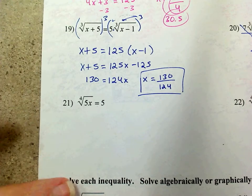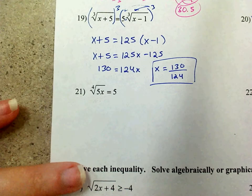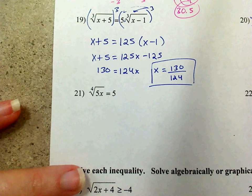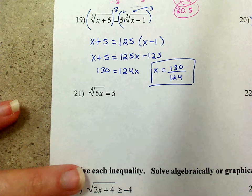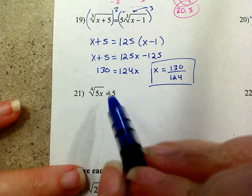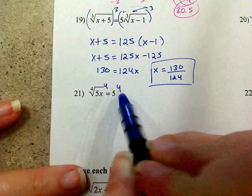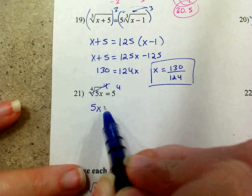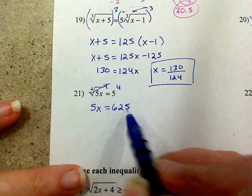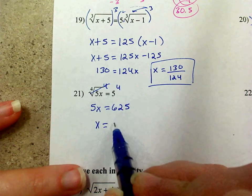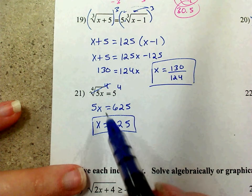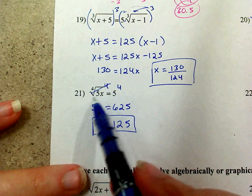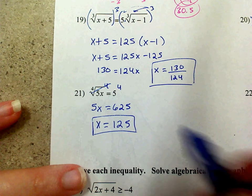Now let's talk about 21. Problems 21 and 22 are both even roots, so I do have to worry about extraneous solutions — I might not have to in this case because everything is positive, but I'll still check. In order to get rid of a fourth root, I take the fourth power. So I've got 5x equals 625. Divide by 5 and I get 125. 125 times 5 is 625, and the fourth root of 625 is 5 — so it works.